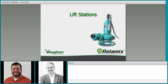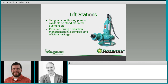For larger lift stations — generally where you'll see very large installed non-clog pumps, high-flow central collection stations collecting from many different stations at once — Vaughan conditioning pumps are available as a stand-mounted submersible that drops into the lift station on a stand. They provide mixing and solids management in a compact and efficient package. These can be dropped in and moved between stations with a quick disconnect and multiple panels. We typically target six turnovers per hour here as well.